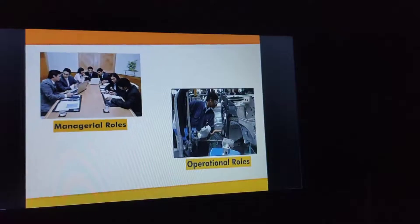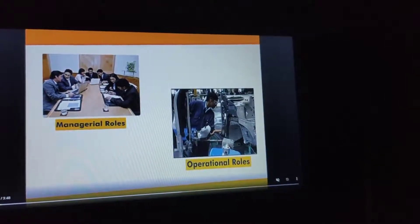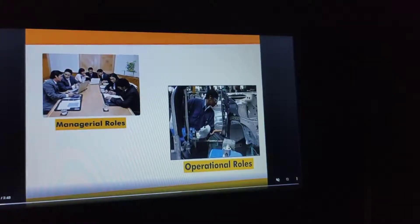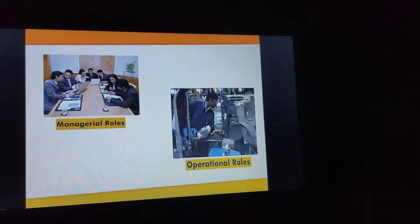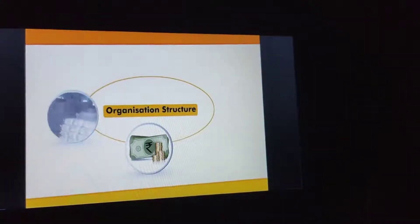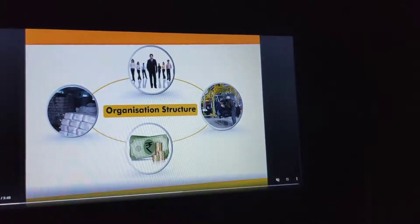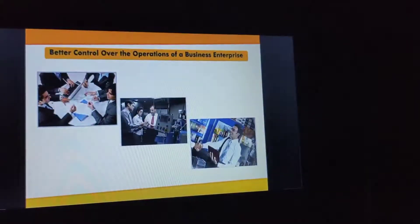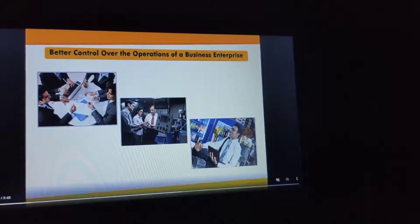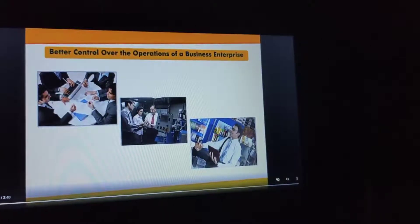It helps in making managers' roles and operational roles effective. Organization structures help in utilizing the resources of the organization — men, machines, money, and material — and we can have better control over the operation of a business enterprise. Otherwise, the organization remains impaired in the absence of a proper organization structure.